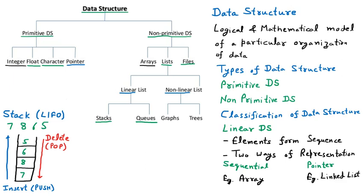In the diagram of the stack, we have shown that it is last in first out. Seven, eight, six, five are the elements inserted in that order and deleted in the reverse order. Now we are discussing the next concept, which is the queue.